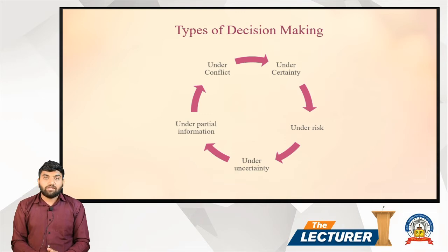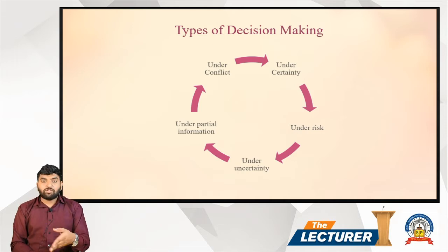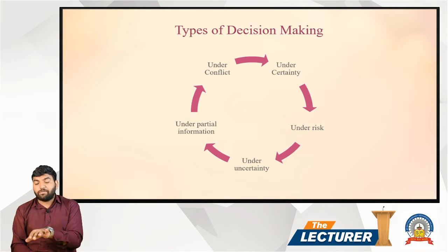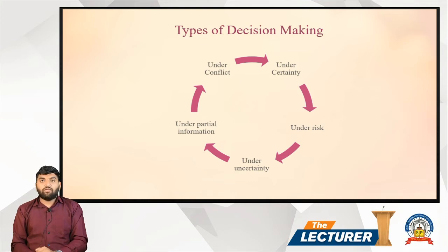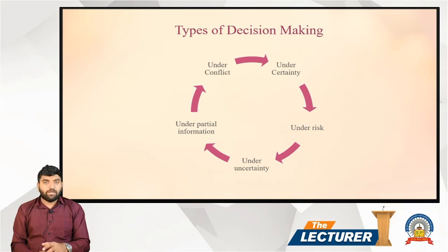The third type is under partial information, meaning you have some information about the future — for example, that the petrol price will increase or the potato price will increase — but not complete information. The fourth type is under conflict, such as worker strikes, competitor actions, or competition from other companies. Decision theory is mainly helpful in all these situations.